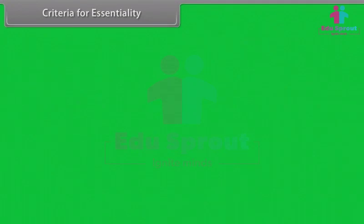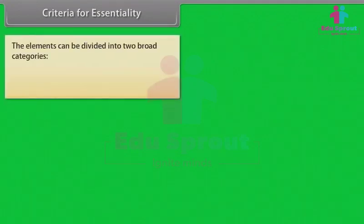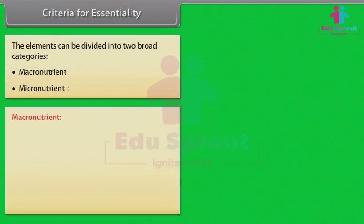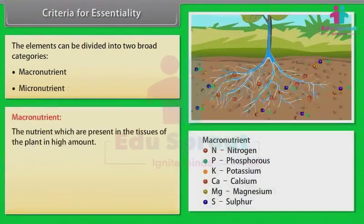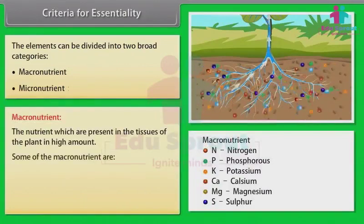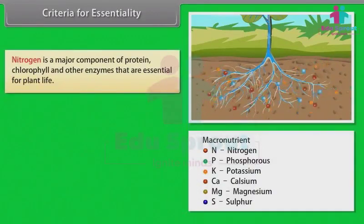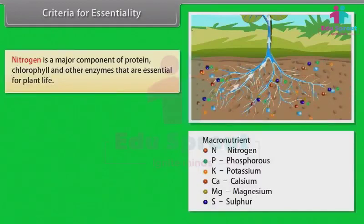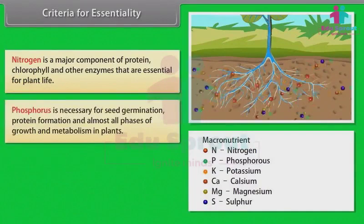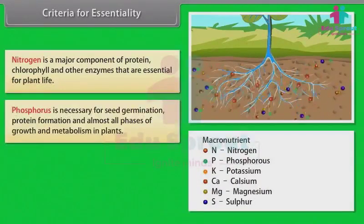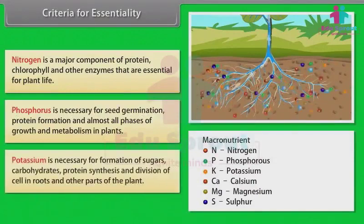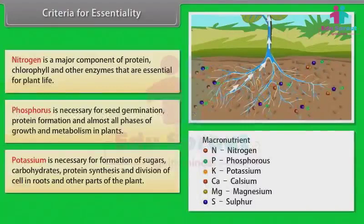Essential elements can be divided into two broad categories: macronutrients and micronutrients. Macronutrients are nutrients present in plant tissues in high amounts. Some macronutrients are nitrogen, phosphorus, and potassium. Nitrogen is a major component of proteins, chlorophyll, and other enzymes essential for plant life. Phosphorus is necessary for seed germination, protein formation, and almost all phases of growth and metabolism. Potassium is necessary for formation of sugars, carbohydrates, protein synthesis, and cell division in roots and other parts of the plant.